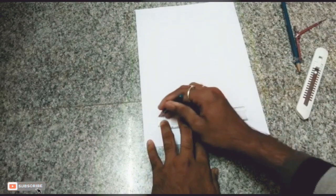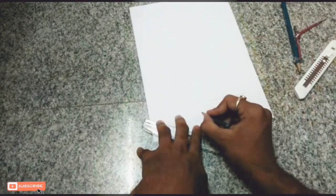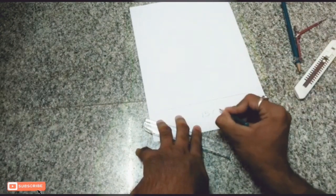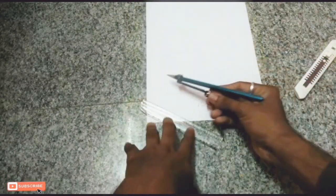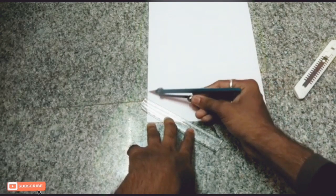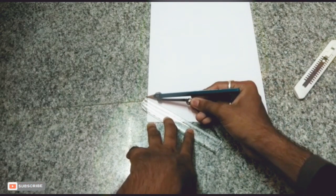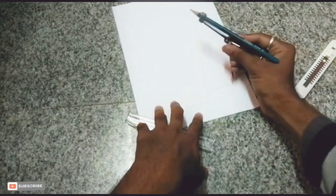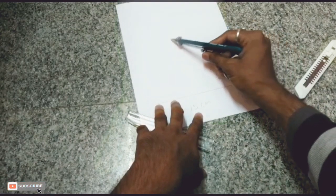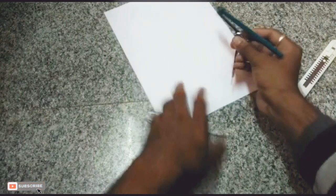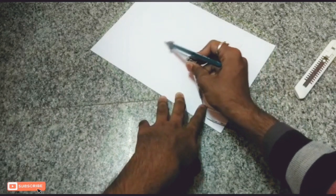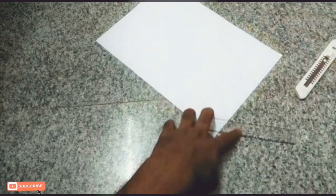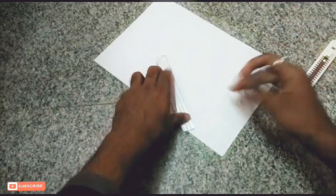After drawing the 15 centimeter line, take a compass and measure 15 centimeters. Draw an arc from the right side and as usual at the left side. After drawing, join the line to the arc.